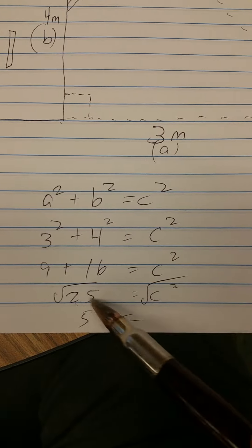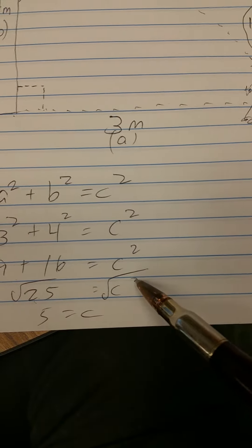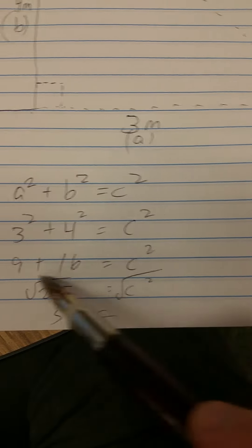These two added together is 25. This is still C squared. Then to undo the square, we take the square root of both.